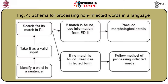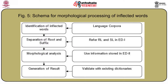If the word is inflected, it has a longer processing path. The machine first identifies an inflected word from the corpus, then separates the root and suffix parts by referring to the root lexicon and suffix lexicon stored in electronic dictionary one. It then performs morphological analysis using information stored in electronic dictionary two, where detailed information of all suffixes is stored. The output is then validated with existing in-built dictionaries, as shown in figure five.